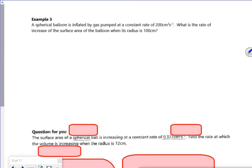So it says a spherical balloon is inflated by gas pumped at a constant rate of 200 centimeters cubed per second. Look at the units. It's got to be volume over time because it's centimeters cubed over time, and it's going up. So that's the volume.